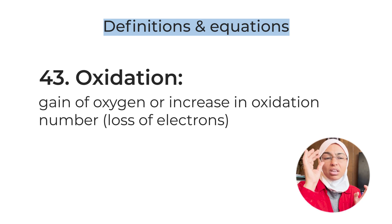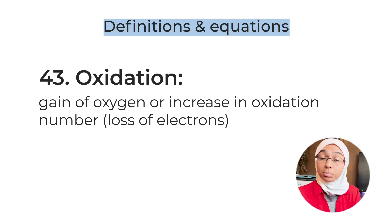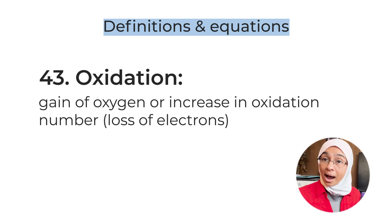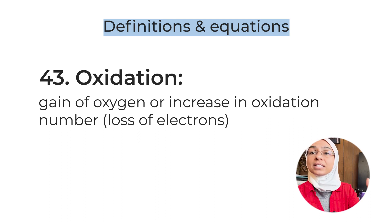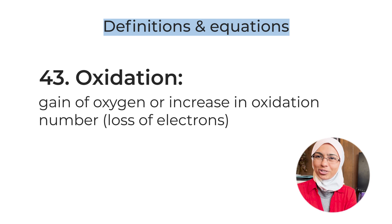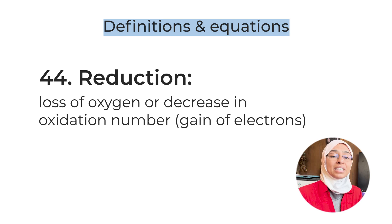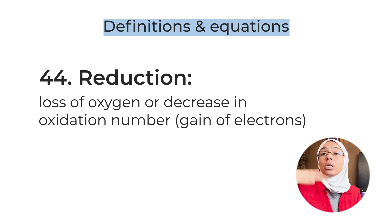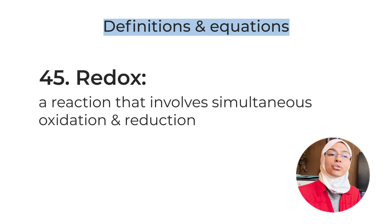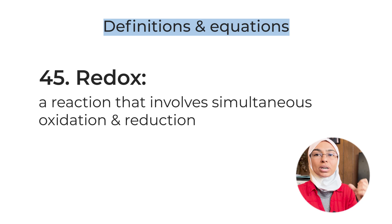Definition number forty-three: oxidation — gain of oxygen, increase in oxidation number, or loss of electrons. For example, if Fe²⁺ changes to Fe³⁺, this is oxidation because the oxidation number increased from +2 to +3. Definition number forty-four: reduction — loss of oxygen, decrease in oxidation number, or gain of electrons. For example, if Fe³⁺ is reduced to Fe²⁺, the oxidation number decreased from +3 to +2. Definition number forty-five: redox — a reaction that involves both oxidation and reduction simultaneously.